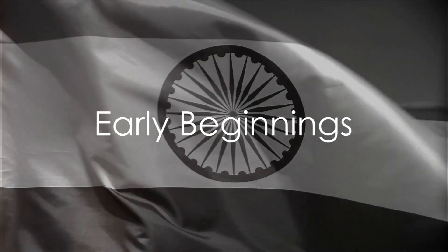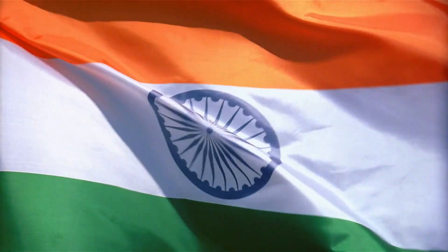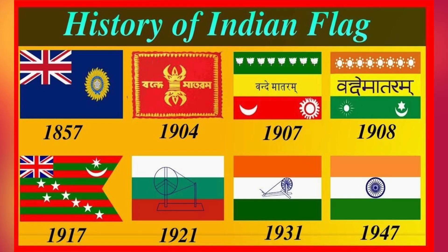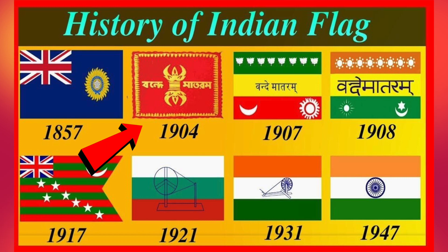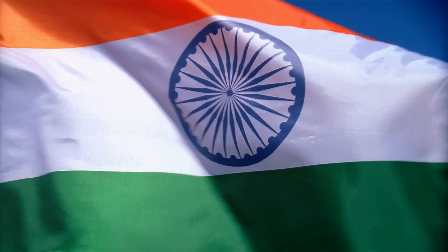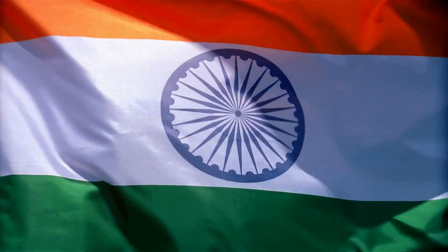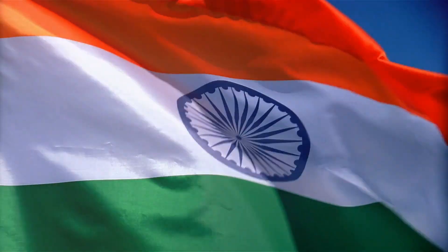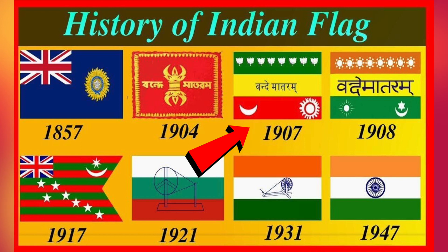The story of the Indian flag begins during the freedom struggle against British rule. The first flag, introduced by Sister Nivedita in 1904, bore the symbols of a thunderbolt and a lotus. The thunderbolt, a weapon of Lord Indra, was a metaphor for the strength of the Indian people, while the lotus represented the blossoming of a new era. Later in 1907, another flag emerged from the Berlin Committee — although not widely recognized, it was a significant step in the journey towards a unified national symbol.